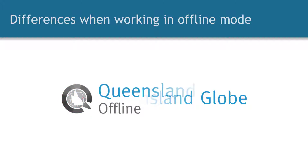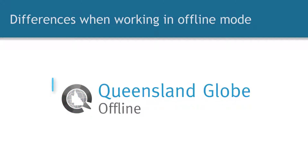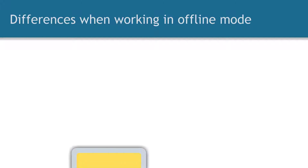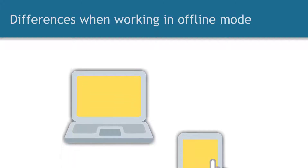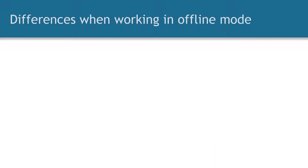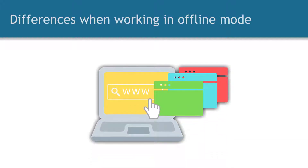You can tell if you are in offline mode as the colour of the Queensland Globe icon will change. Offline mode has been developed primarily for laptops and tablets at this stage. The preferred browser for Queensland Globe and Queensland Globe offline is Chrome. The help section has more detail on browser performance and options.